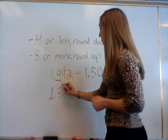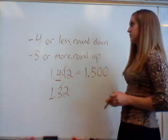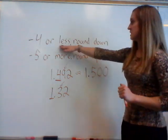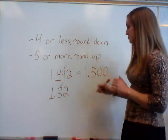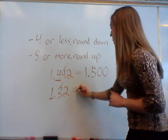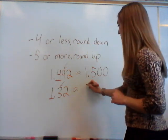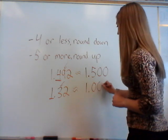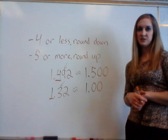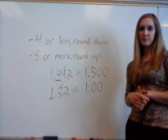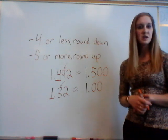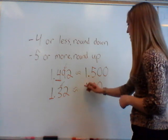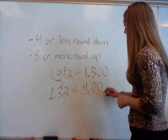In this case, I'm going to look at the three to determine if I round up or down. Since three is less than four, I'm going to round this number down. So I'm going to be rounding to one, and everything behind becomes zeros. Once I've rounded some numbers, I can do some estimating.